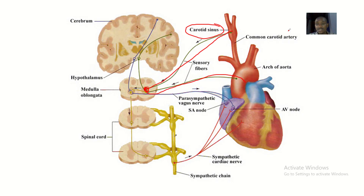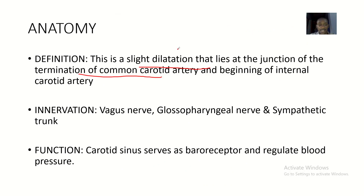If this is the common carotid artery, and this is the internal carotid artery and the external carotid artery, just know that where the common carotid artery is ending and the beginning of the internal carotid artery and the external carotid artery is where the carotid sinus lies. This structure is innervated by the vagus nerve, the glossopharyngeal nerve, and the sympathetic trunk.